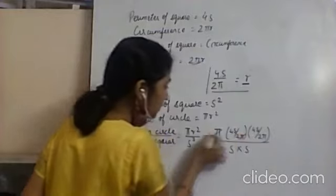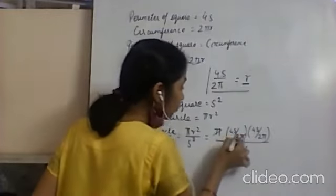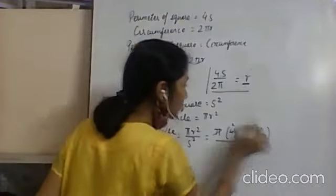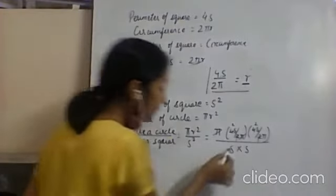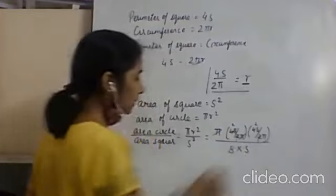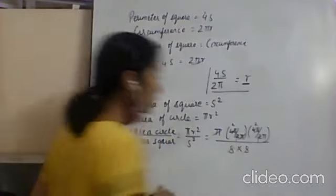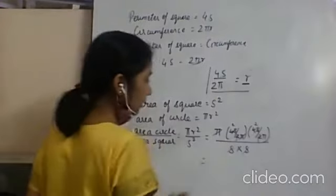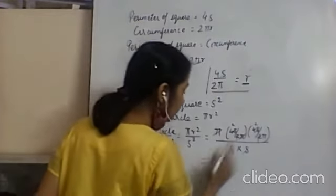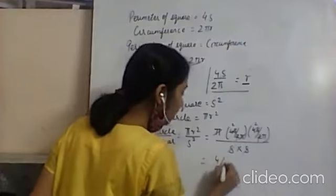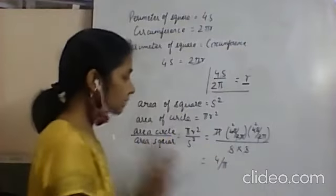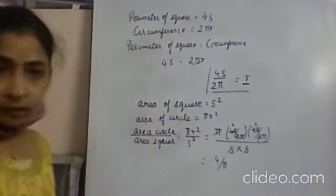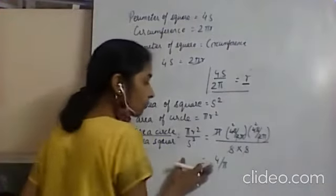Simplifying: π and π cancel. Two ones cancel with two twos. Side and side cancel. What remains is two into two upon pi — wait, we are left with 4 upon π.